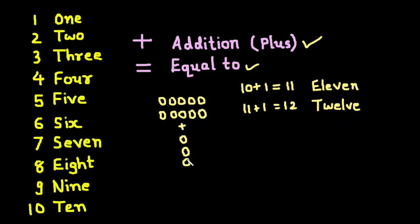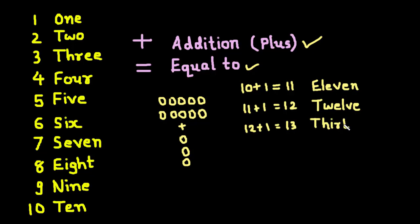Now we have 12 plus 1. We have 1 on unit place and 2 on the unit place — 1, 2 and 3 — so we will put 3 on unit place. The 10's place remains the same, 1. So 12 plus 1 is equal to 13. We can write this as T-H-I-R-T-E-E-N. 11, 12, 13.